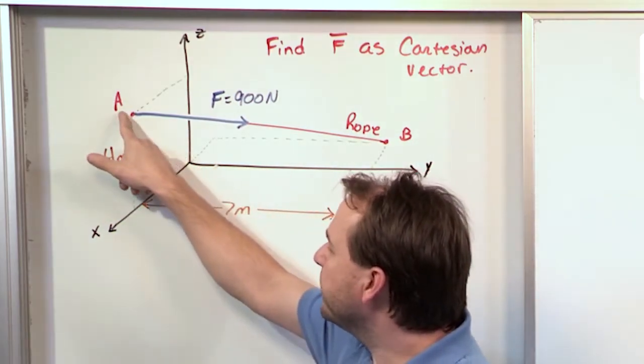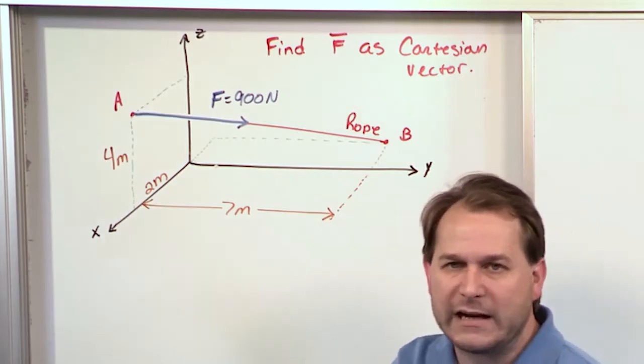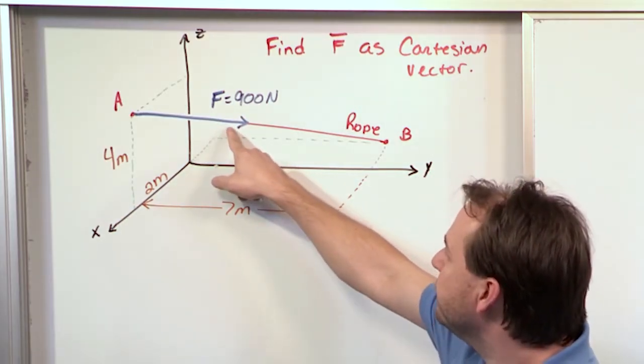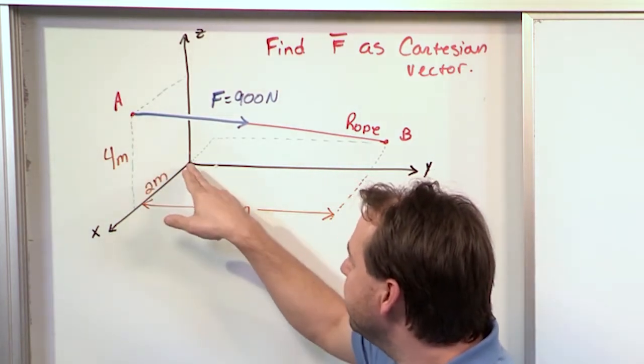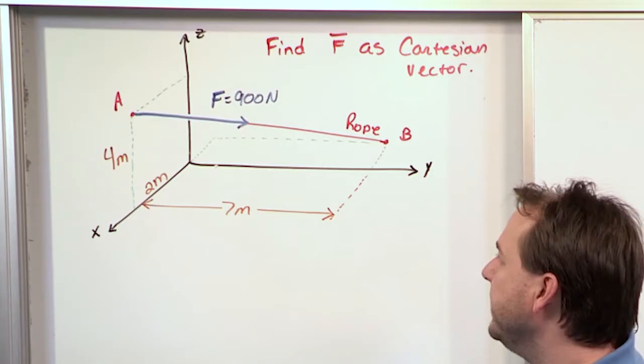And we have a rope tied from point A, and maybe you have someone standing over here or some kind of tension device pulling on it. It's pulling with 900 Newtons, but the primary thing we're trying to get across here is the force vector is not starting at the origin. It starts from point A, and it terminates at point B.